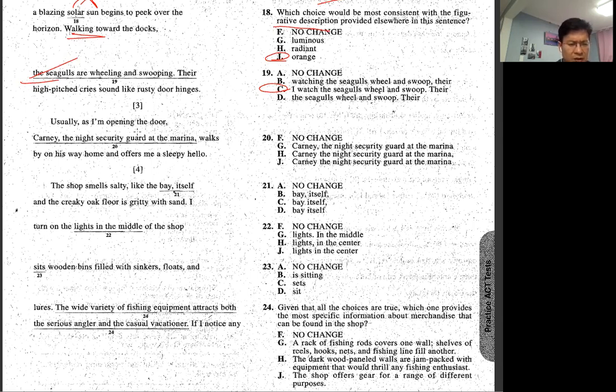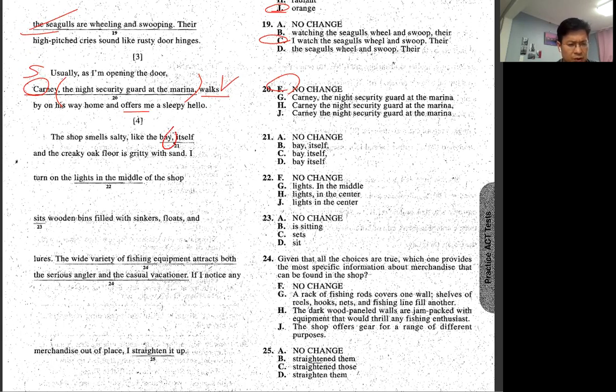Usually as I'm opening the door, the neighbor Carny, the night security guard at the marina, walks by on his way home and offers. Walks, offers me, okay? The night security guard. So I think nothing wrong with this one because we have two commas. So Carny is name and then subject and verb, so just to describe about this. We don't put comma on itself. So itself, himself, herself, all these things we call it as emphatic pronoun. For the emphatic pronoun we don't put comma. So A, B wrong. And then you have to choose between C and D. And of floor, so this is subject and verb. Because of that we have to have a comma after this, I mean after itself. That's why C.